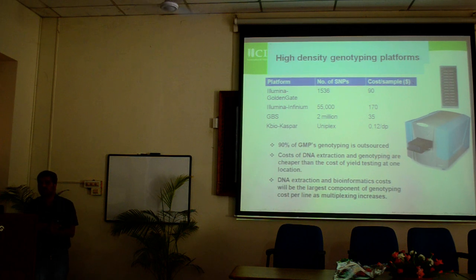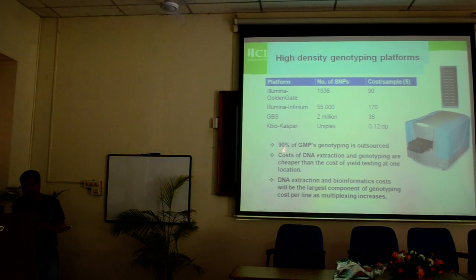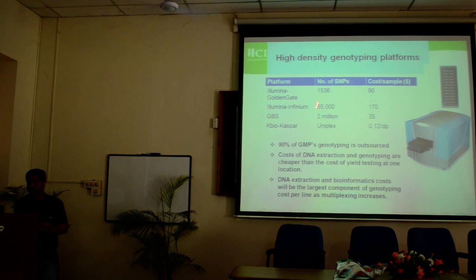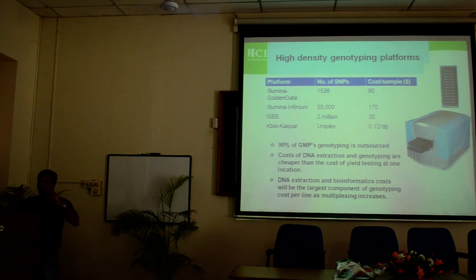The second development is on genotyping platforms. As I told you, like cell phones, the cost per data point is falling. We predominantly use these platforms in CIMMYT. The Illumina Golden Gate platform uses 1536 SNPs imprinted on one slide — if you submit a sample and genotype it, you get back 1536 data points for each sample.